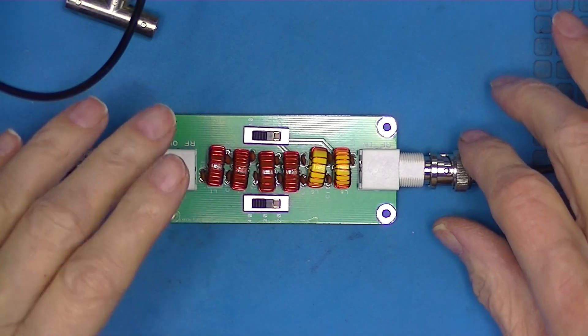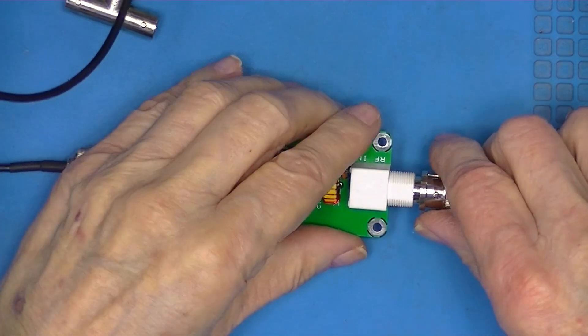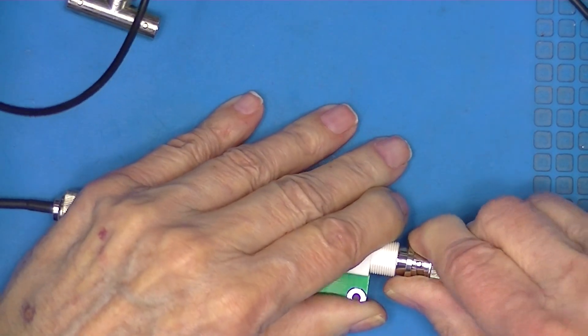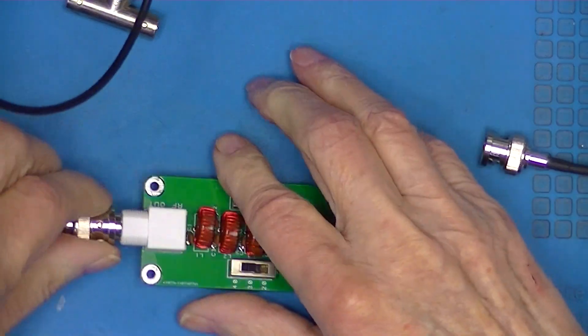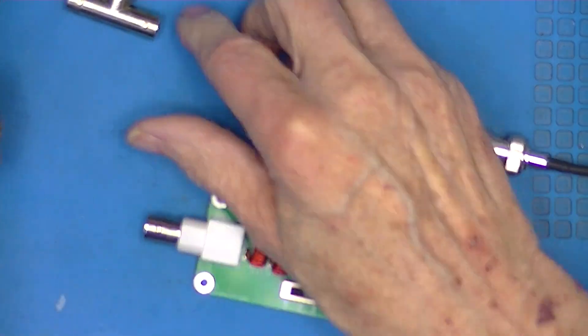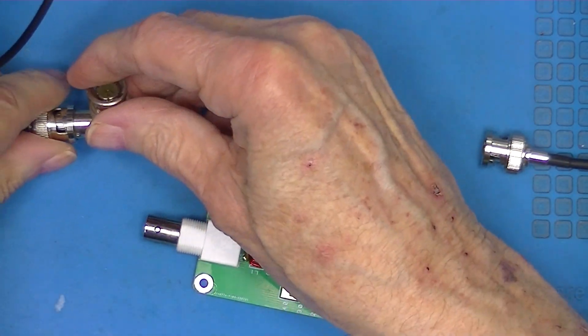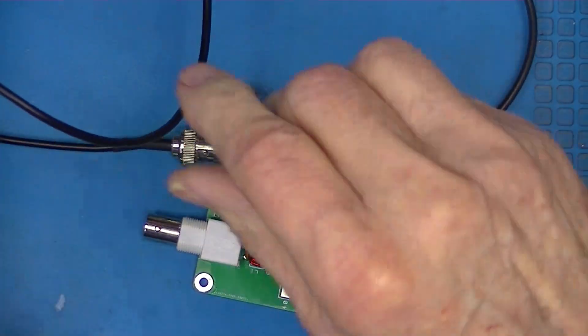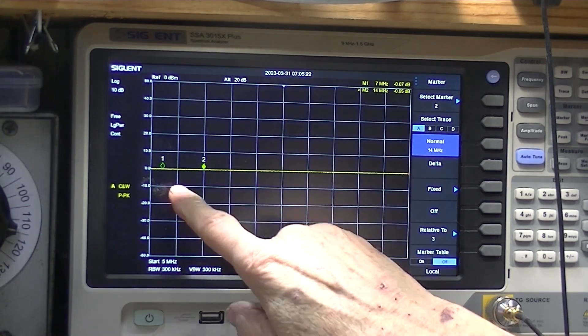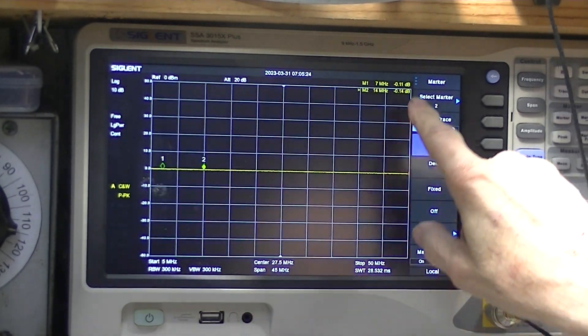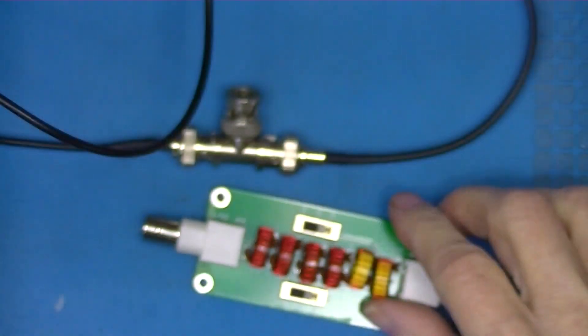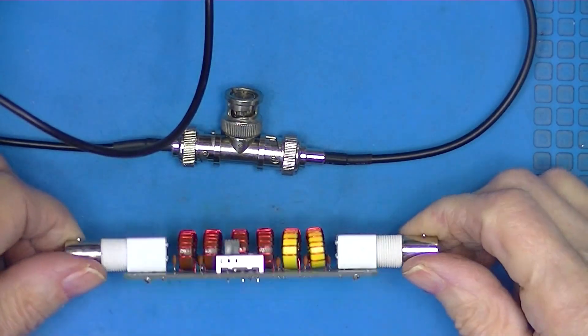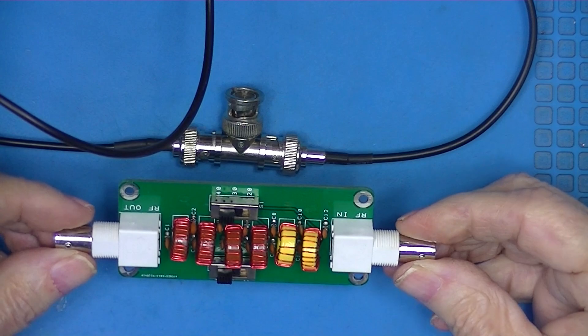Let me remove the filter and replace it with a dead short. And you can see both markers are at zero decibels. So this little insertable low-pass filter brings along with it a minimum insertion loss of around 4 to 5 dB on all bands.